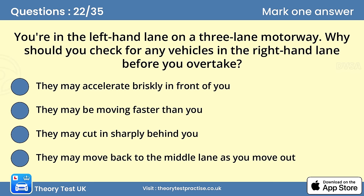Question 22. You're in the left-hand lane on a three-lane motorway. Why should you check for any vehicles in the right-hand lane before you overtake? The answer is D: They may move back to the middle lane as you move out. Vehicles overtaking in the right-hand lane may return to the center lane when they've finished their maneuver. You should look for this before starting to pull out. Don't rely on the size of your vehicle to claim right-of-way.